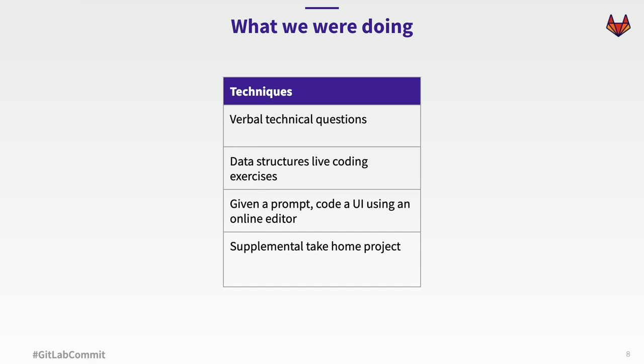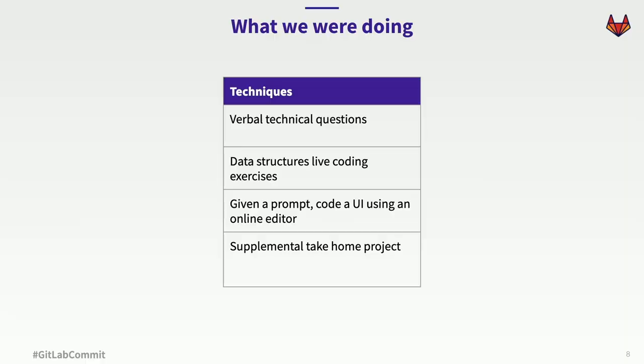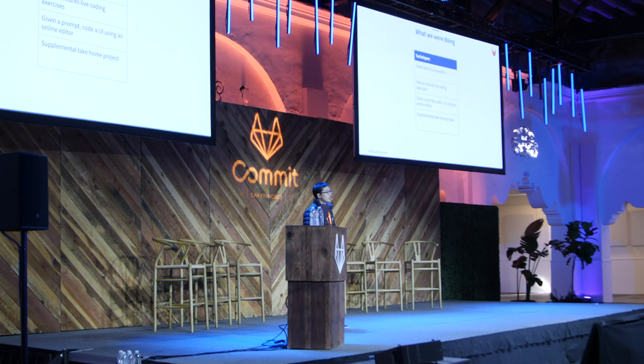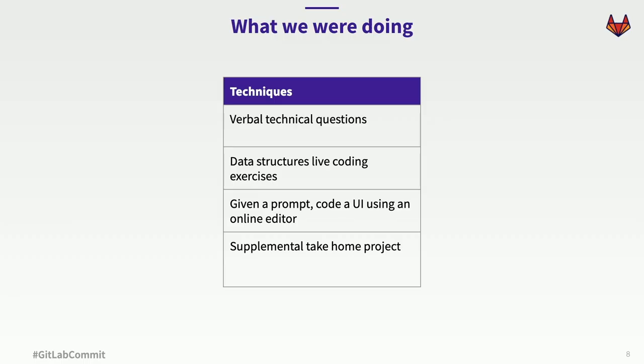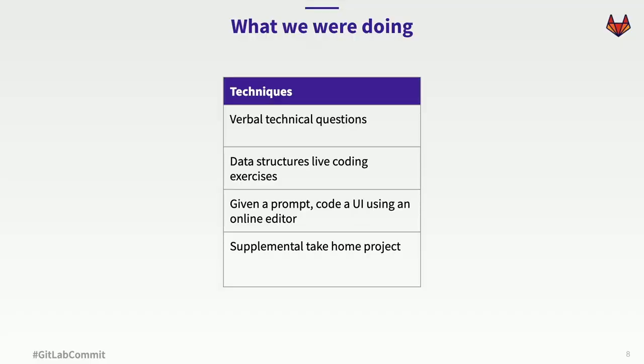Let's take a step back. What were we doing before? We used to have multiple techniques — each interviewer might do a little bit of here and there, or some might stick with one technique. One technique was verbal technical questions: we would ask the candidate to describe some technical concept and have a dialogue. Sometimes we'd do data structure questions, live coding exercises — asking a candidate to write a linked list or a sorting algorithm. Sometimes we'd give them a prompt and say, here's the description, please write a UI and live screen share. And when these things weren't sufficient, we'd also send candidates a supplemental take-home project.